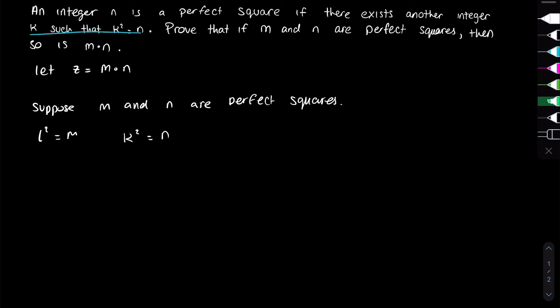Now we want to prove that since m and n are perfect squares, z is also a perfect square. Let's start with m times n. According to what we found on the previous line, we can substitute m by l² and n by k².